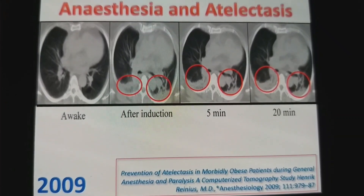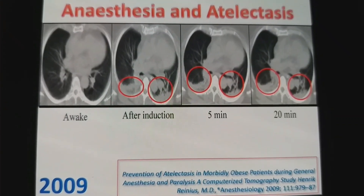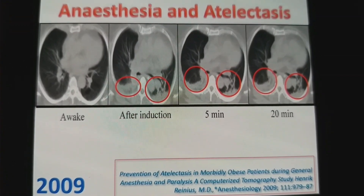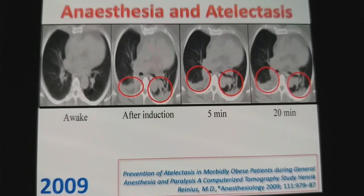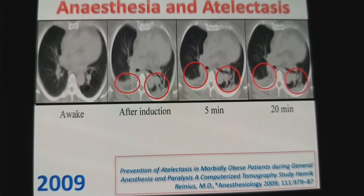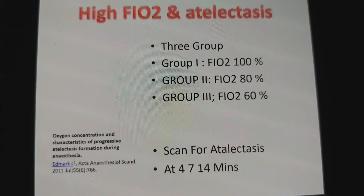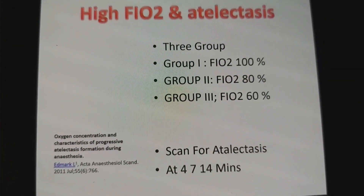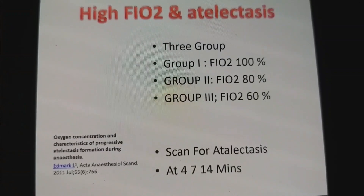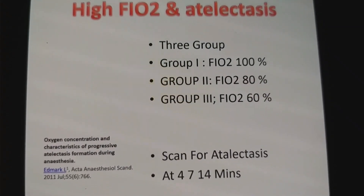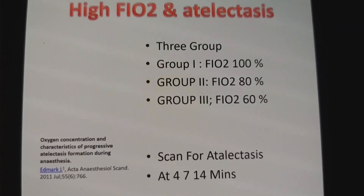The amount of atelectasis ranges from 4% to 21% of the total lung volume, which is significantly high.